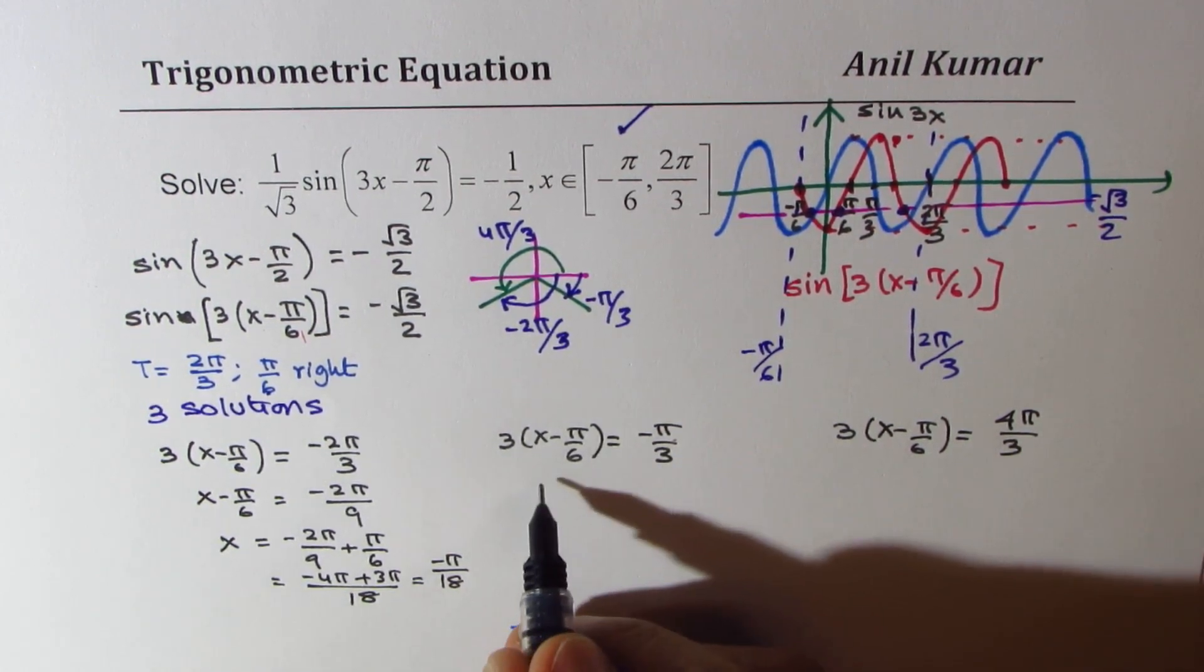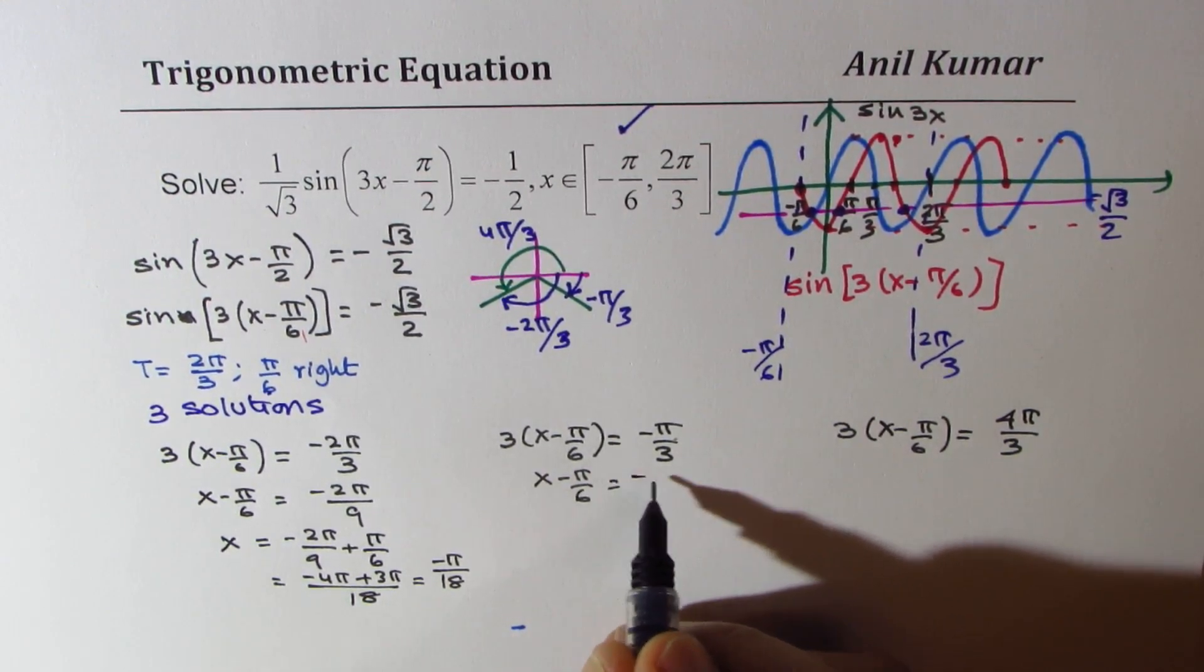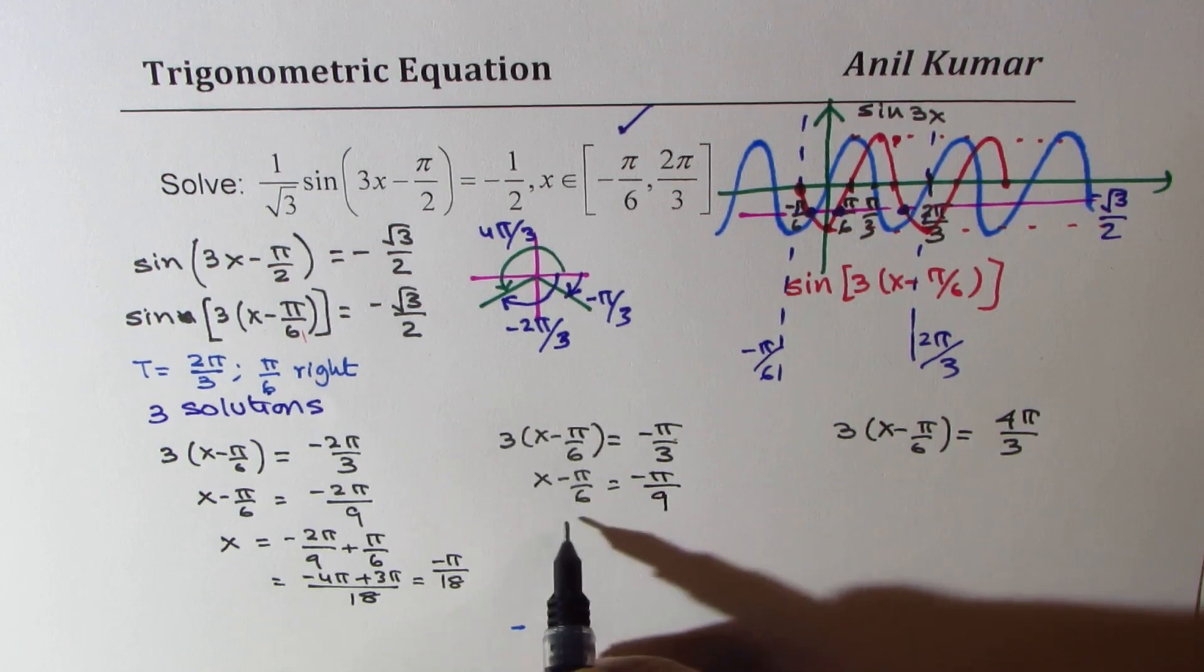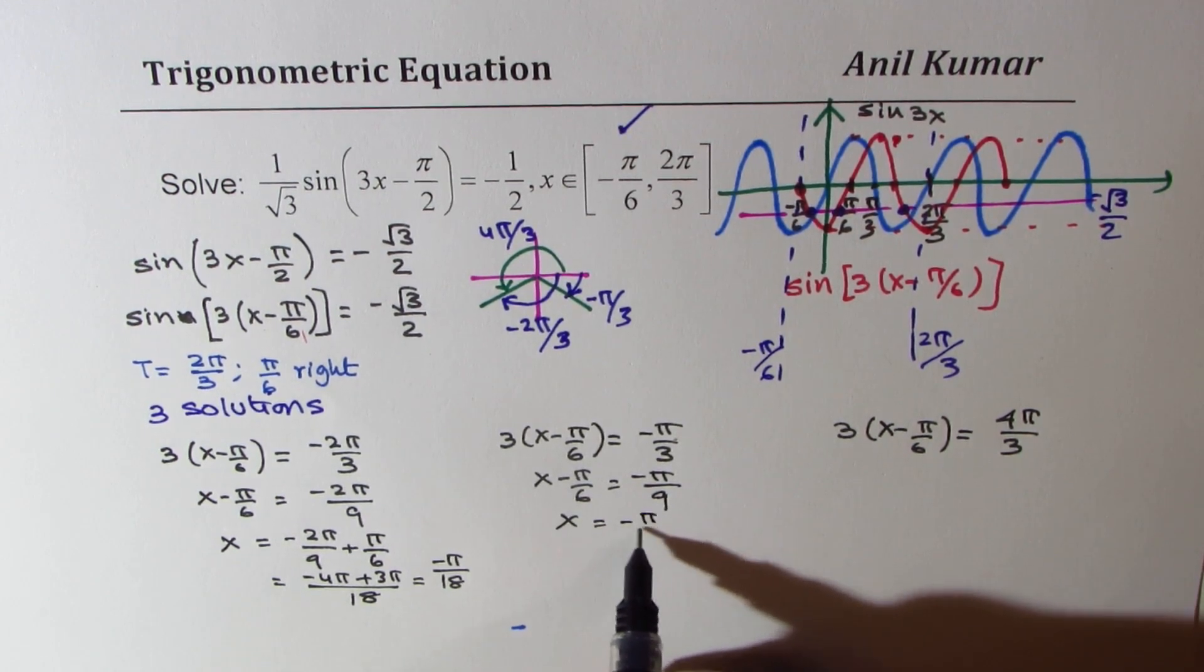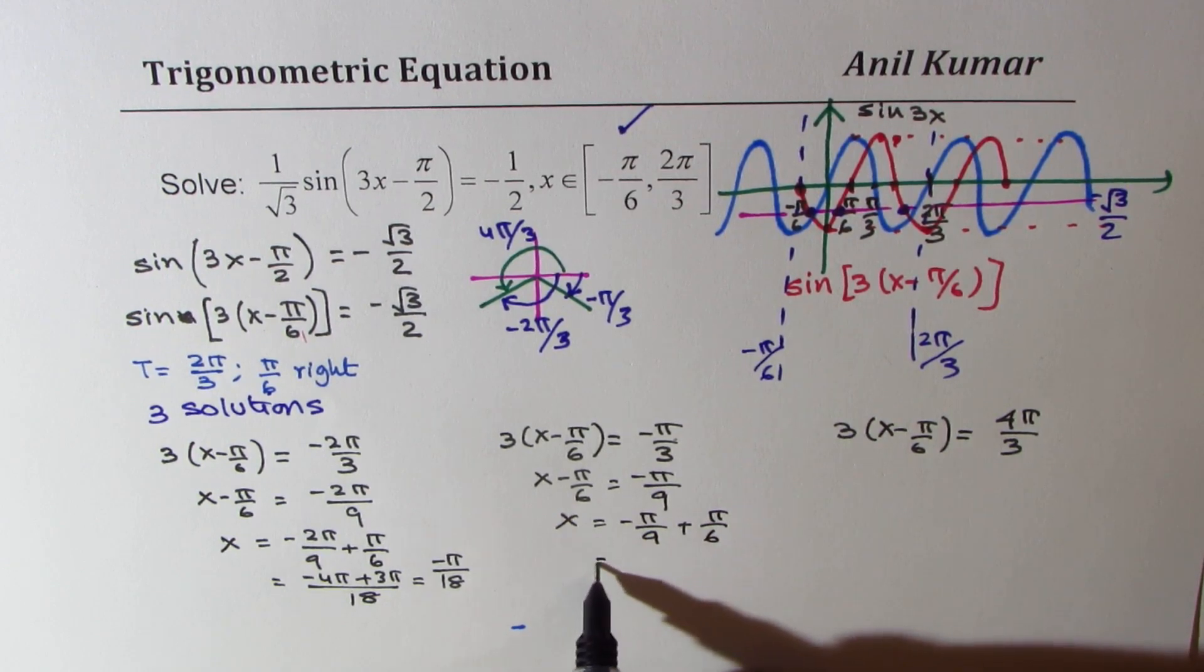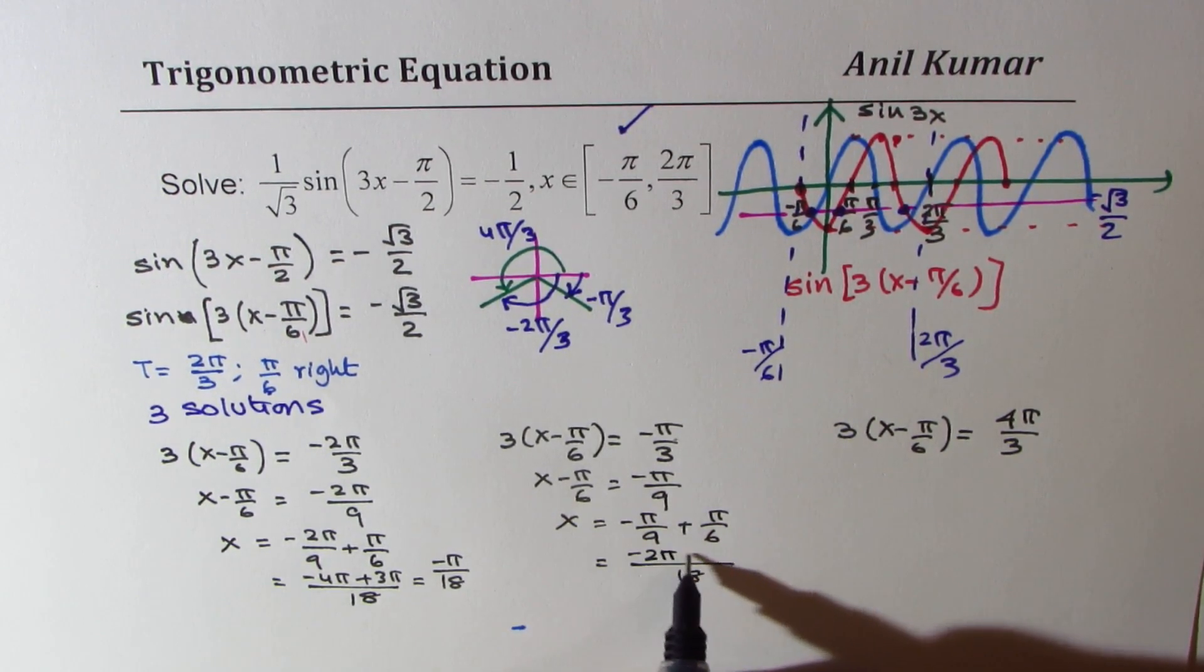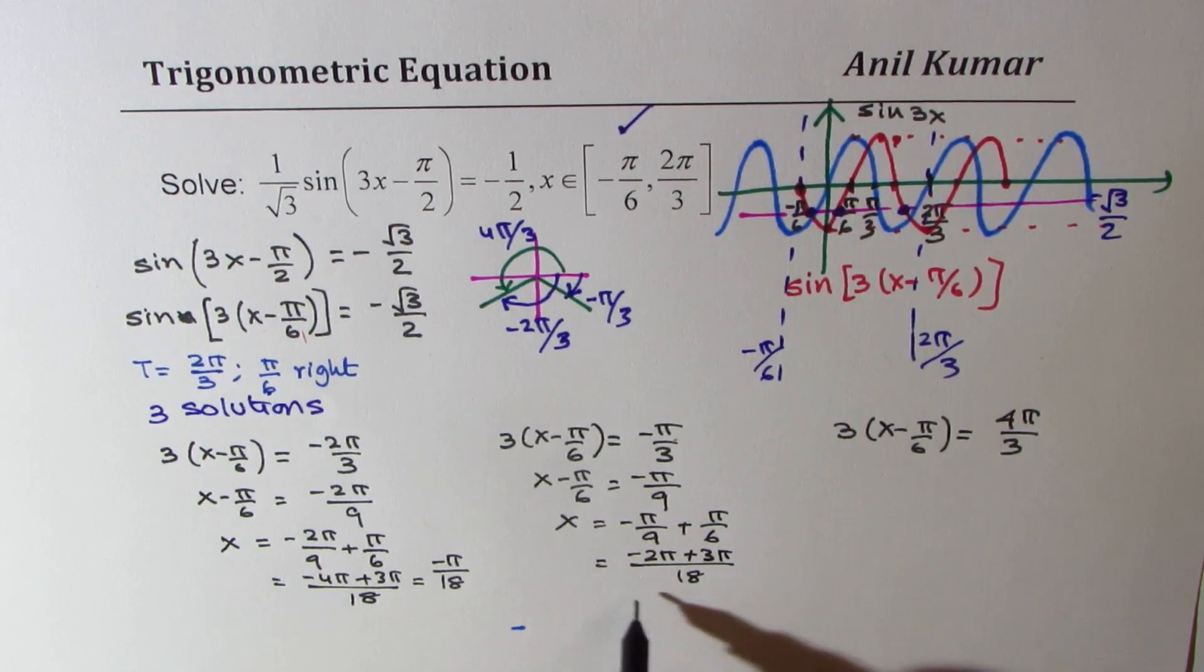Let's solve here. We get x minus pi by 6 equals minus pi by 9. So x equals minus pi by 9 plus pi by 6. 18 is the common denominator, so minus 2 pi plus 3 pi. That gives you pi by 18 as the second solution.